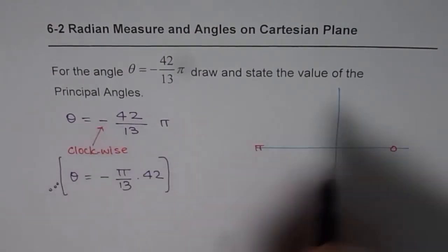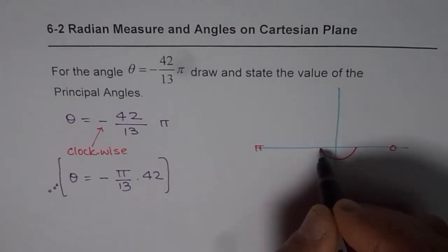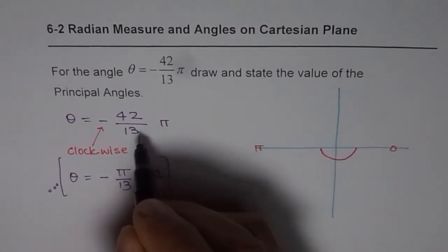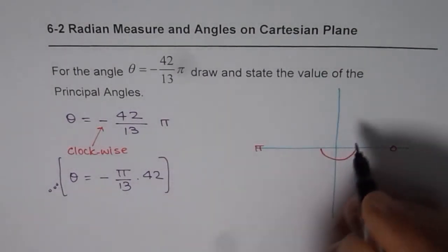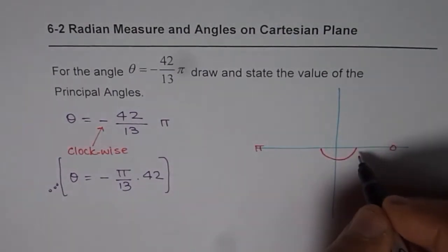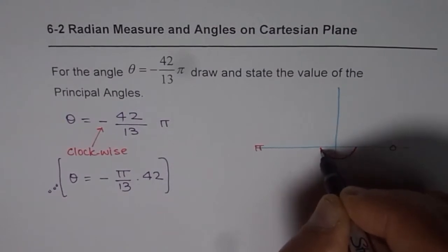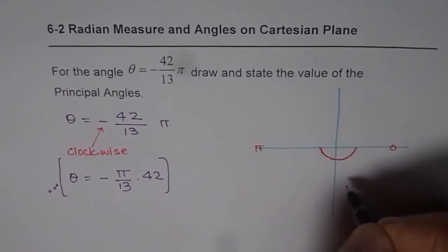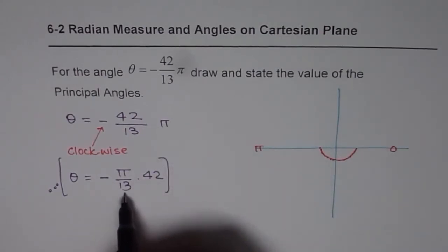But when I am going minus, I will go from here to here. So if I go one half circle, then it is π by 13. That means I have divided this π into 13 equal parts. So that means 1, 2, 3, 4, 5, 6. 6 full and 7th half. So 6 and then 7, 8, 9, 10, 11, 12, and this becomes the 13th part. So let's go through 42 of such 13 parts.